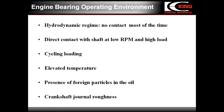This slide presents the main conditions under which engine bearings operate. Most of the time, engine bearings work in a hydrodynamic regime, which means no metal-to-metal contact between the bearing and the journal surfaces. Direct metal-to-metal contact occurs at low RPM speed and high loads. The load is cycling due to the alternating character of cylinder pressure. The bearing operates at an elevated temperature. Foreign or dirt particles present in the oil affect the bearing operation. And the crankshaft surface has a roughness.